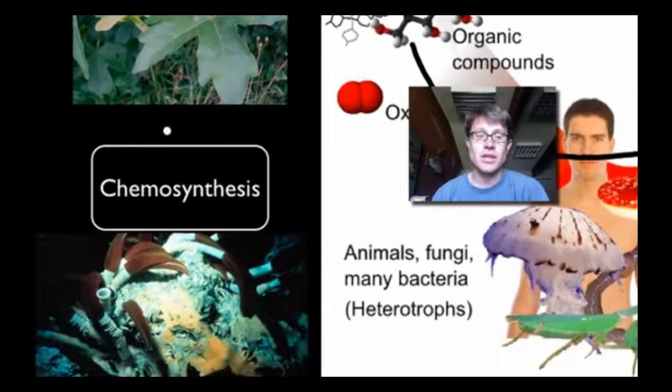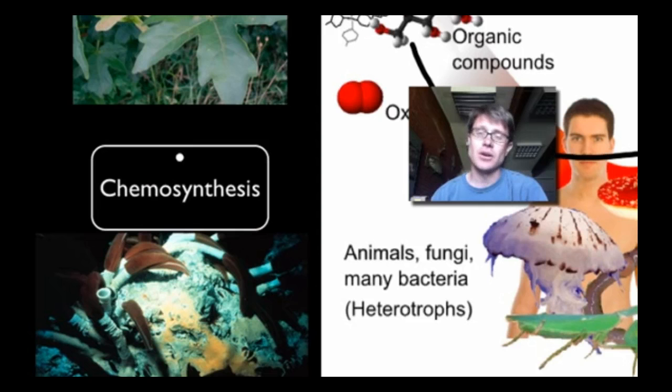But I do want to briefly talk about chemosynthesis. Chemosynthesis occurs where there's not a lot of light on our planet. Where is a great example of that? Deep, dark in the ocean.